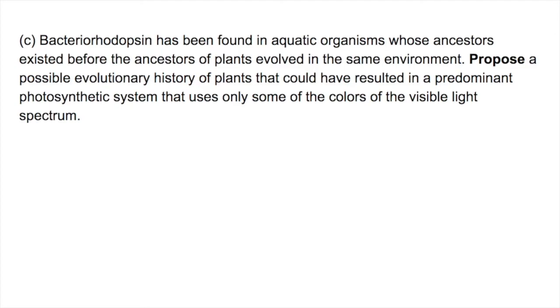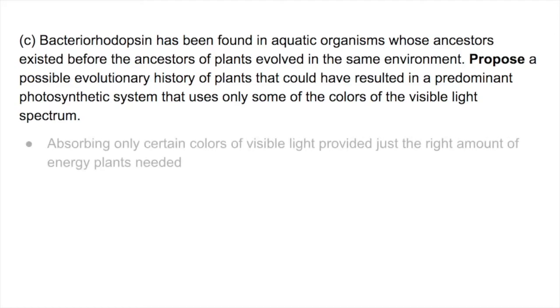Bacteriorhodopsin has been found in aquatic organisms whose ancestors existed before the ancestors of plants evolved in the same environment. Propose a possible evolutionary history of plants that could have resulted in a predominant photosynthetic system that uses only some of the colors of the visible light spectrum. When an organism wants energy, it's not going to take in more energy than it really needs. So maybe it only needed to absorb certain colors of visible light, and that provided just the right amount of energy the plant needed.